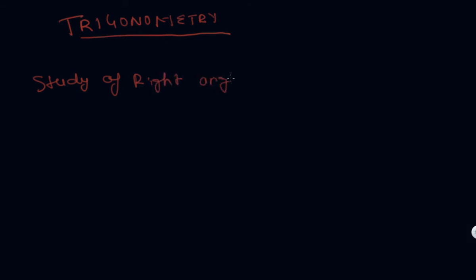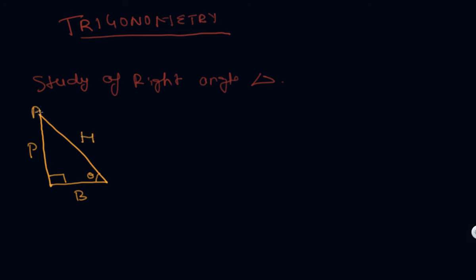We already know what a right angle triangle is. In this triangle, this angle is 90 degrees and this is angle theta. Let me mark the sides: this is perpendicular, this is base, and this is your hypotenuse. This vertex is C.